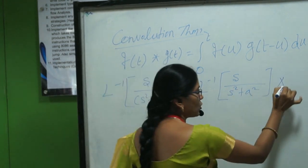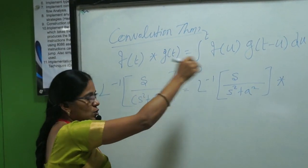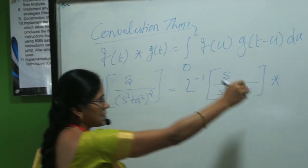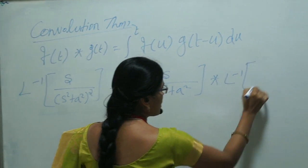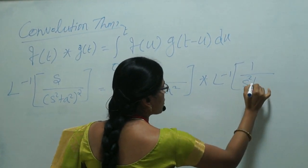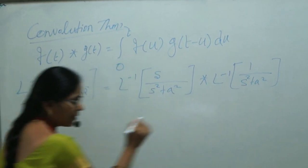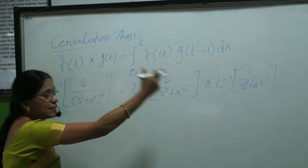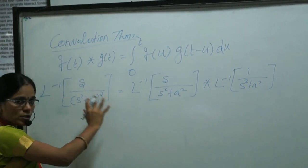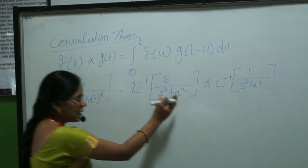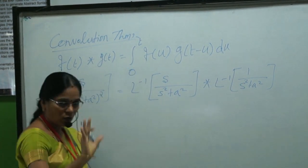We use the convolution concept, denoted by star. So here: L inverse of s/(s² + a²) convolved with L inverse of 1/(s² + a²). The denominator whole squared is split into (s² + a²) times (s² + a²).